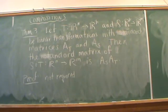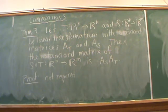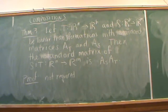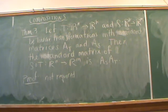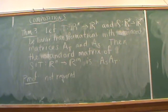Theorem 3 says if we have two linear transformations — T going from Rn to Rk and S going from Rk to Rm — and T and S have standard matrices A sub T and A sub S respectively, then the standard matrix of the composition of these two linear transformations is going to be the matrix A_S times A_T.